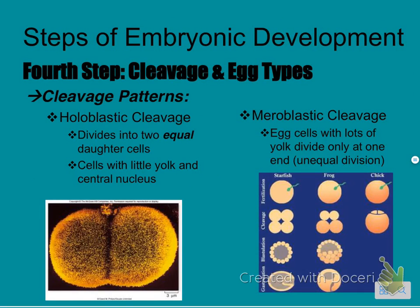There are several cleavage patterns. Holoblastic cleavage divides into two equal daughter cells; cells that do this have very little yolk and a central nucleus. Then there is meroblastic cleavage — these are egg cells that have lots of yolk and undergo unequal division, dividing only at one end of the cell. For example, a frog undergoes meroblastic cleavage — notice how lopsided the division is.